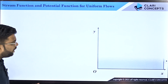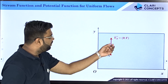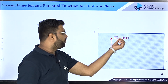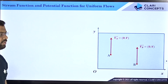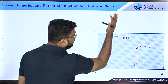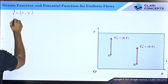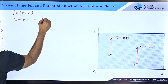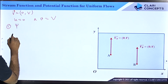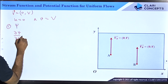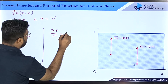Now let me take another uniform flow, this time in the y-direction. When the flow is in the y-direction, all the velocities will be in the y-direction. The velocity vector is (0, V), where 0 is the u-component and capital V is the component along the v-direction. At any point you get the same velocity value because the flow is uniform. So u equals zero and small v equals capital V.